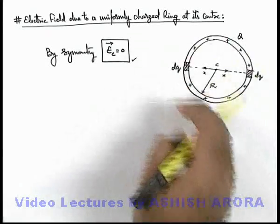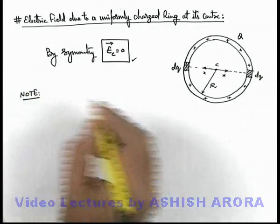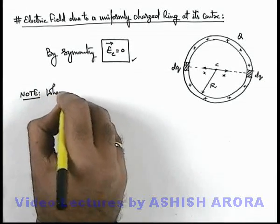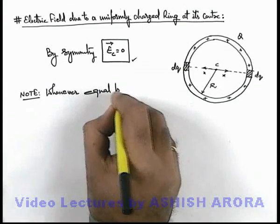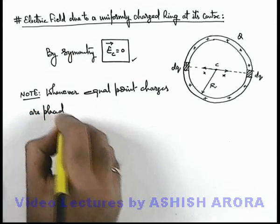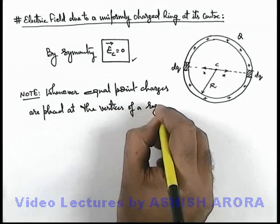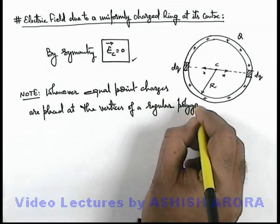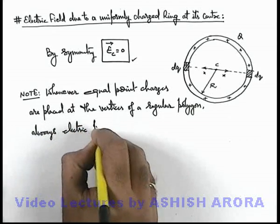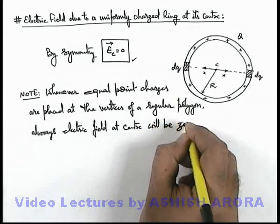Using the same logic of symmetry and uniform distribution of charge, we can write down a note. Whenever equal point charges are placed at the vertices of a regular polygon, the electric field at the center will always be zero.